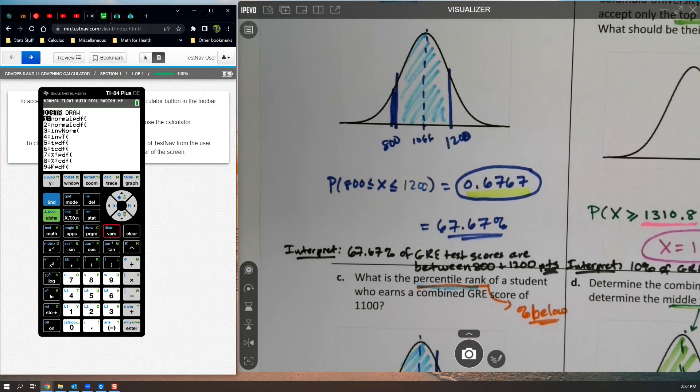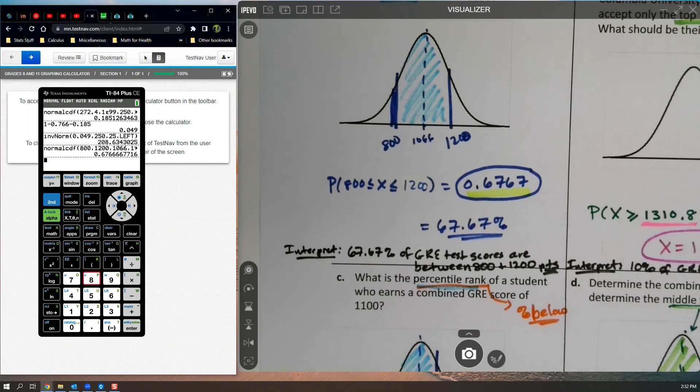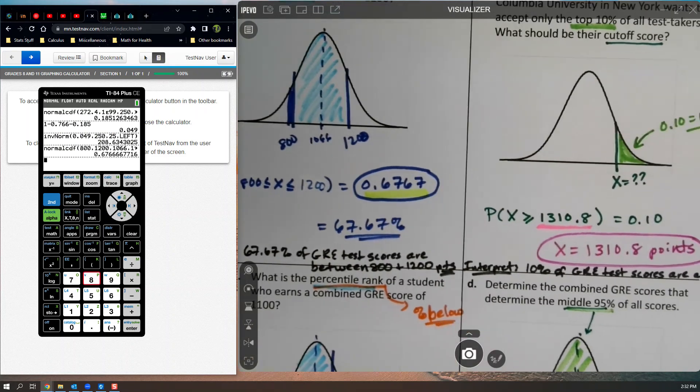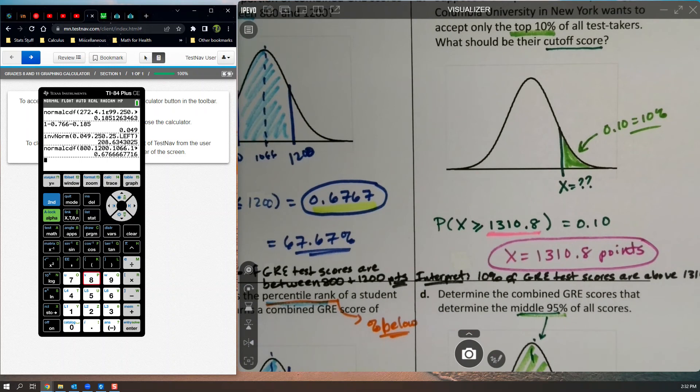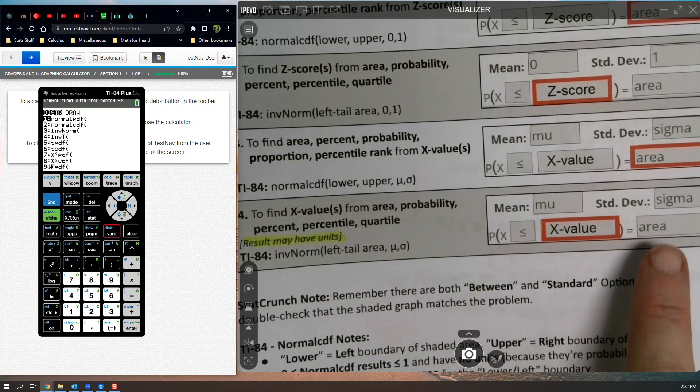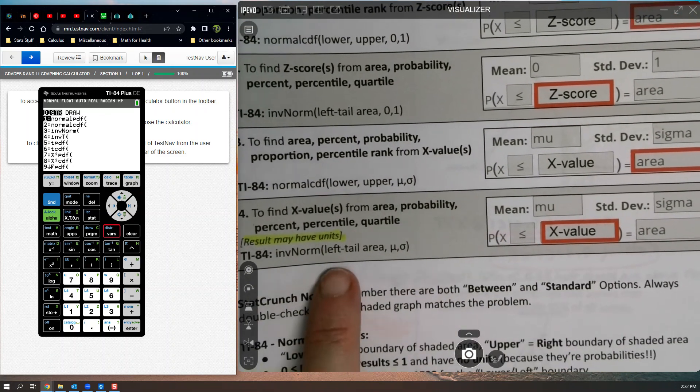800, 1200, 1066, 191. So if you have a new calculator, you can do this. That's a number four. You have an area, you want to find the X value. So that's an inverse norm. So inverse norm, left tail area, or area in general.